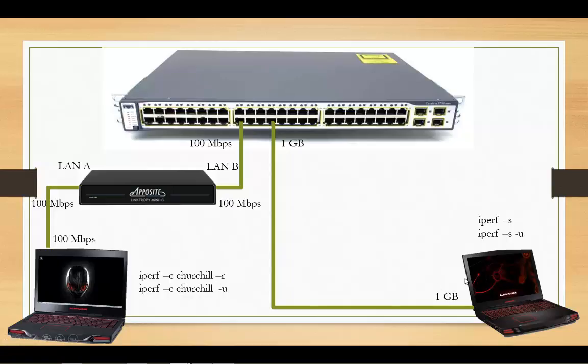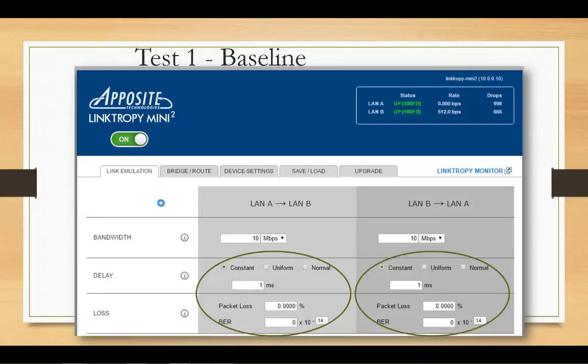We're running iperf point-to-point and changing settings in the Linktropy mini box. The big reason we're doing this is we got into a debate with a customer about packet loss versus delay — they were trying to explain that one is less observable than the other, that one is the better of two evils. I said they're both awful, and I suggested we set up this lab to find out which of the two would actually be noticeable. That's the goal here.